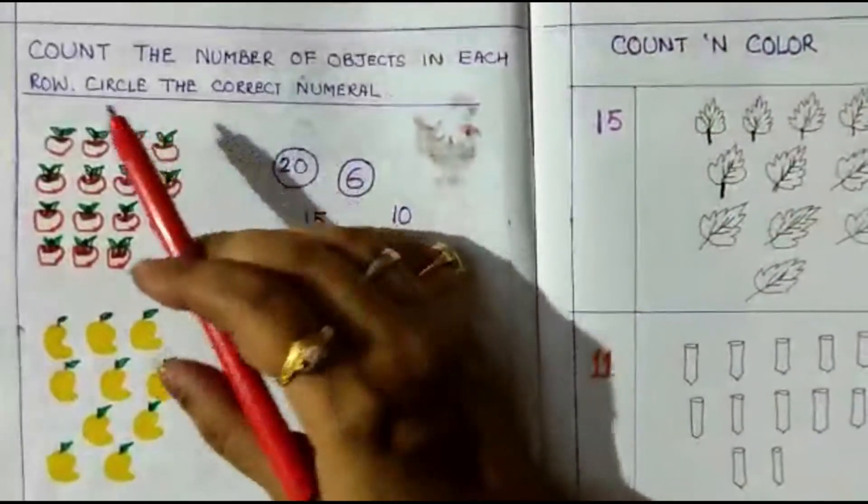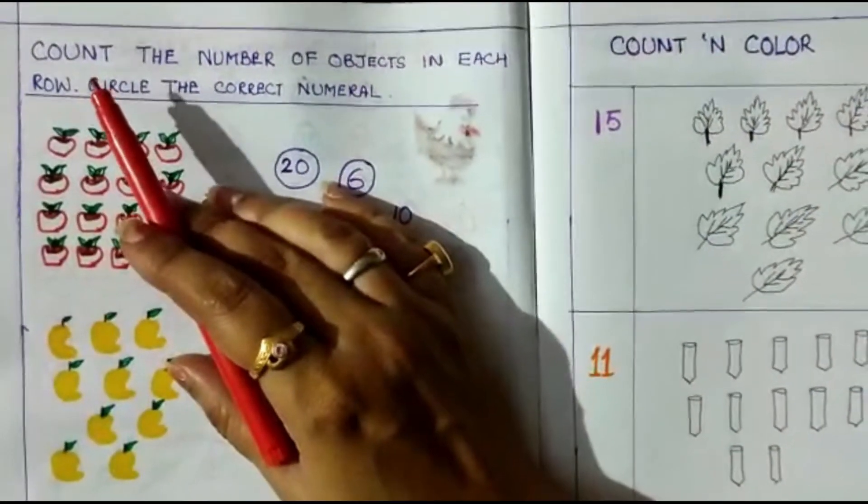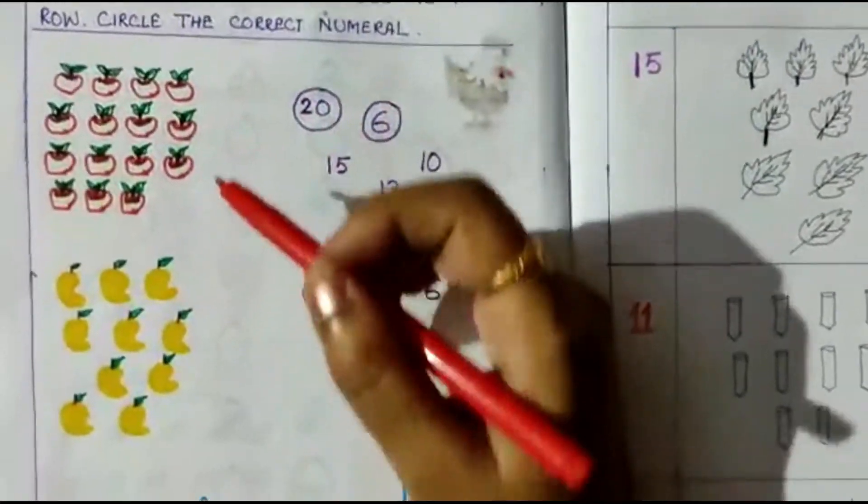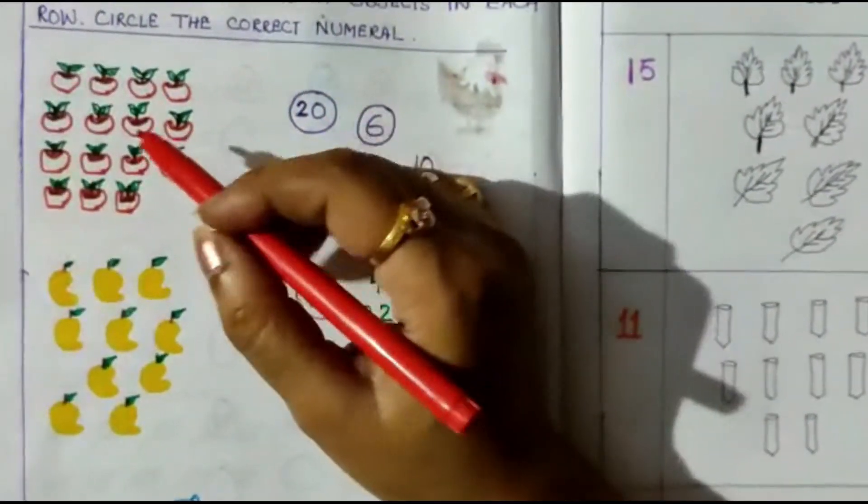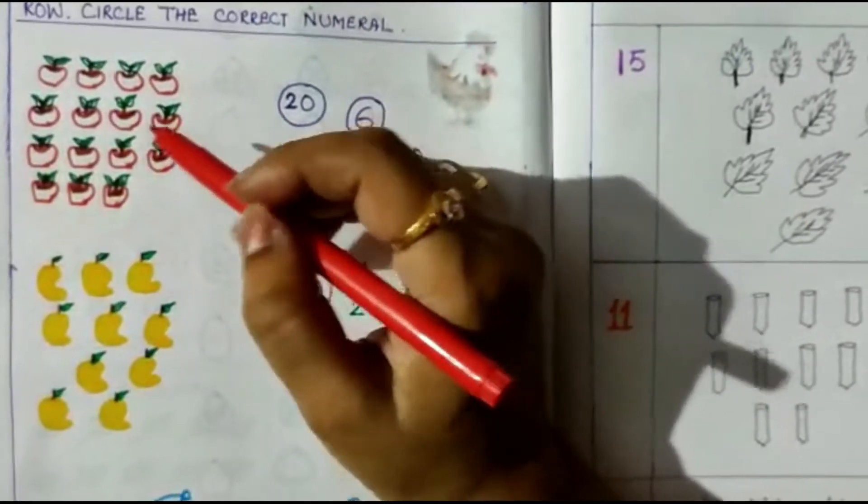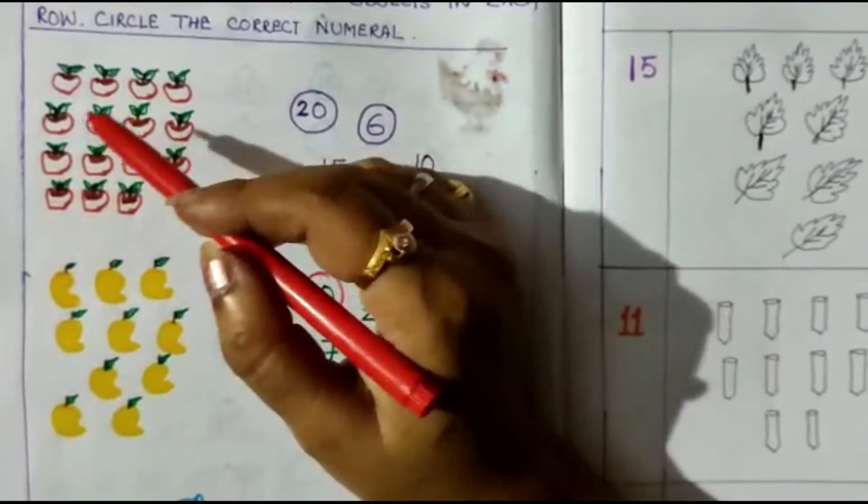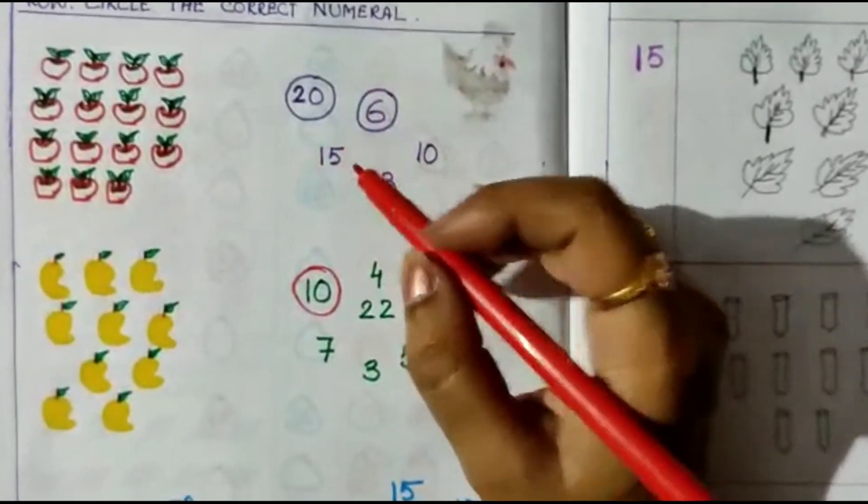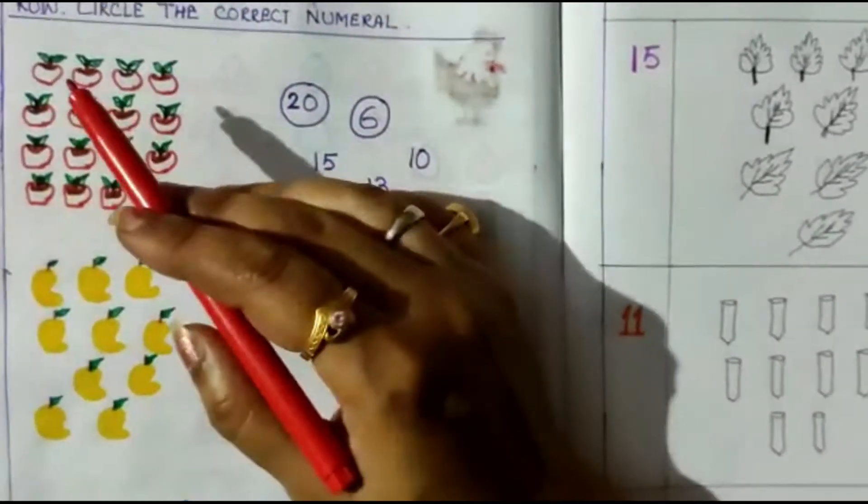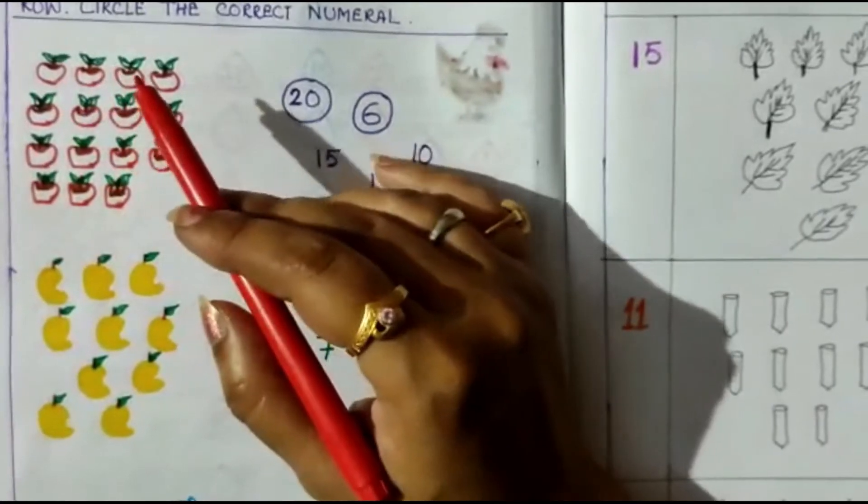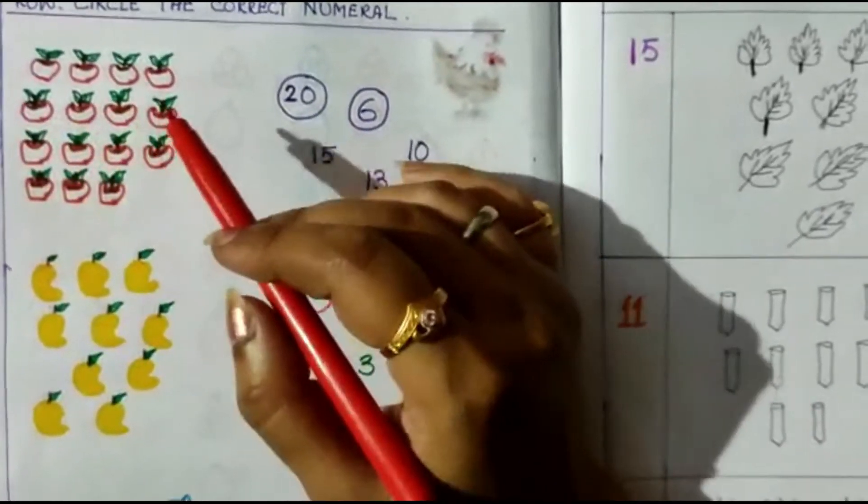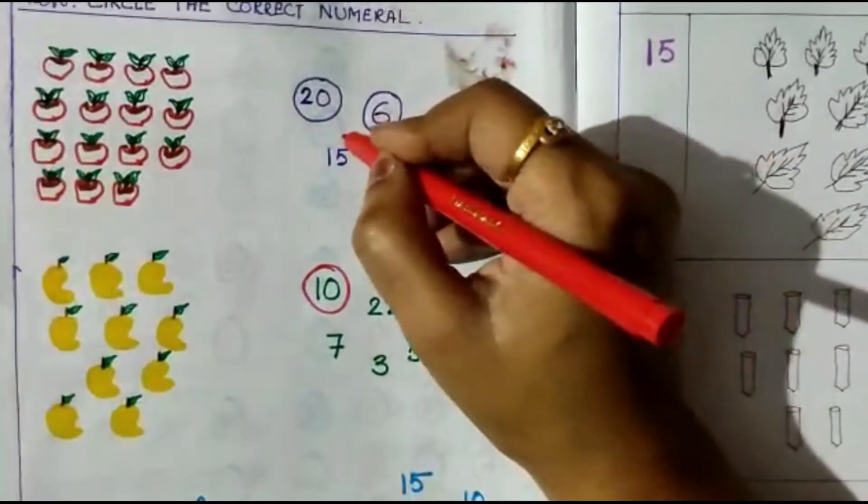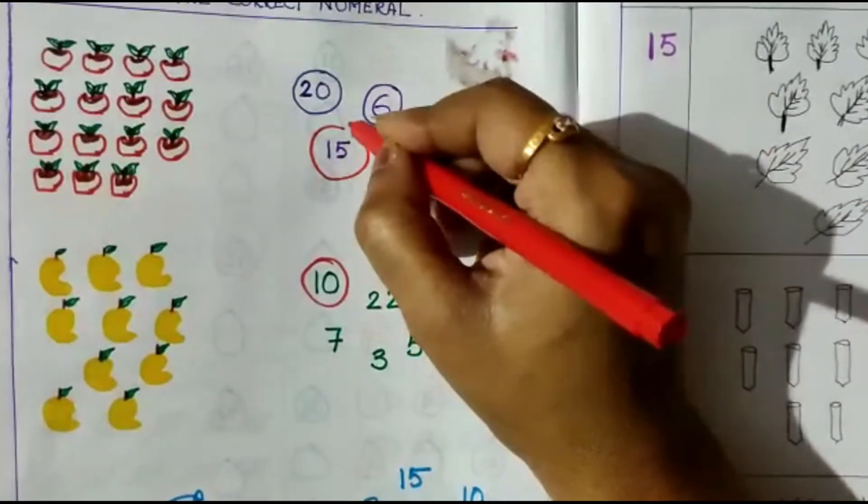Next worksheet is also on counting numbers. Here the question is: count the number of objects in each row, circle the correct numerals. I have different figures here, I have apples. Count the number of apples and circle the numbers here. If I count 1, 2, 3, 4, 5, 6, 7, 8, 9, 10, 11, 12, 13, 14, 15, I circle 15.